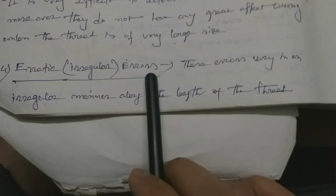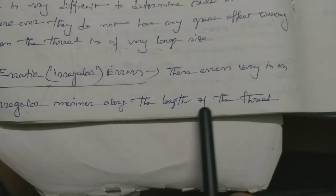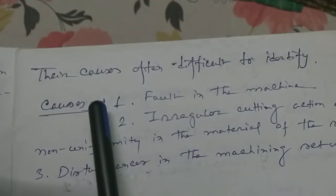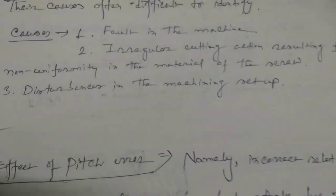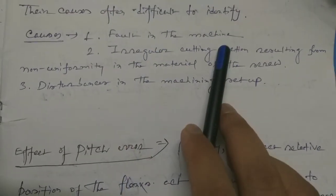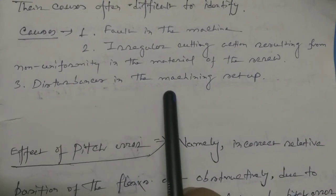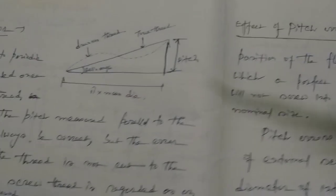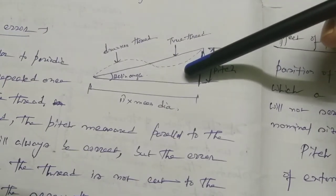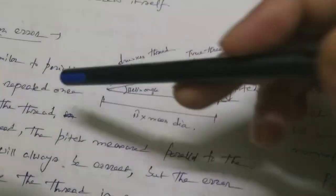The last type is erratic or irregular errors. These errors vary in an irregular manner along the length of the thread and their causes are difficult to identify. The causes include: faults in the machine; irregular cutting action resulting from non-uniformity in the material of the screw; and disturbances in the machining setup.